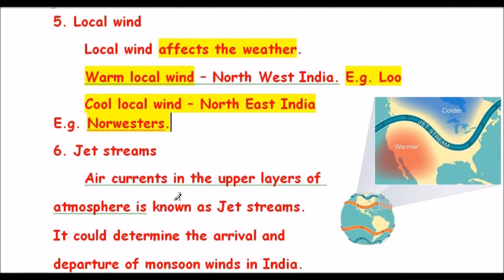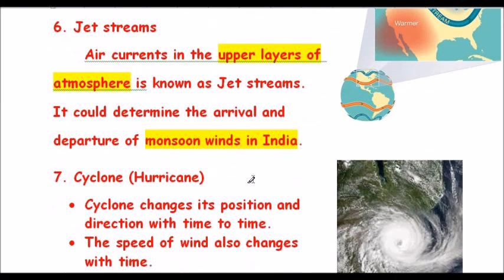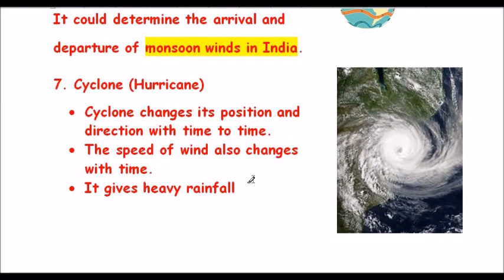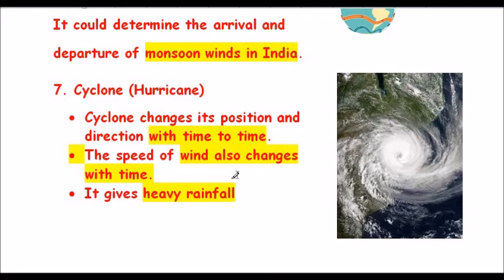Jet streams are air currents in the upper layer of the atmosphere that determine the arrival and departure of monsoon winds in India. Cyclones, or hurricanes, change their position and direction over time. The speed of wind also changes with time and causes heavy rainfall.